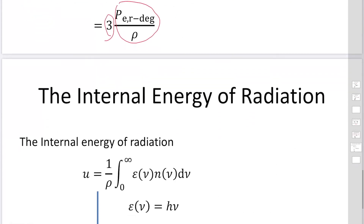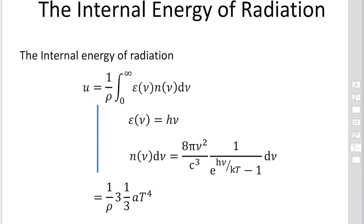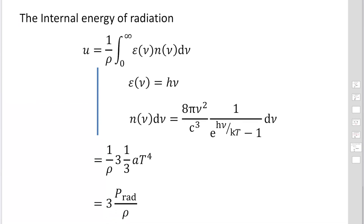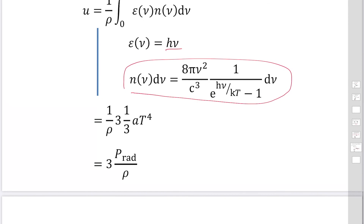Finally, we find the internal energy of radiation — the internal energy of photons. We use the same equation, but the energy of photons is the Planck constant times frequency, and the distribution is the Planck distribution. Substituting and performing the integrals, the answer becomes 3 times the radiation pressure divided by the density. The internal energy of radiation has exactly the same expression as the internal energy of a relativistic completely degenerate gas.